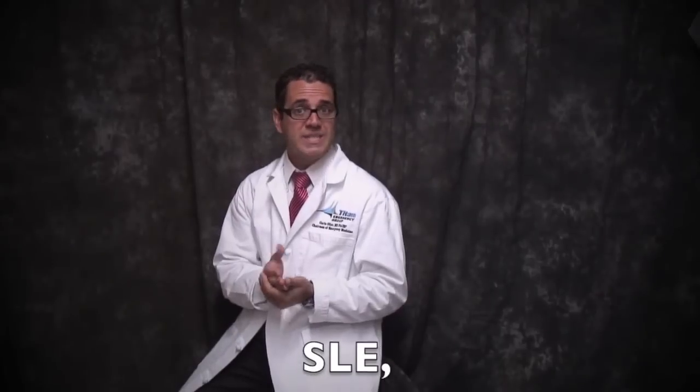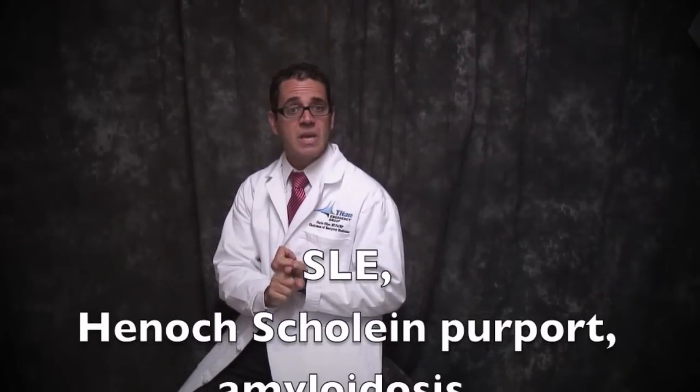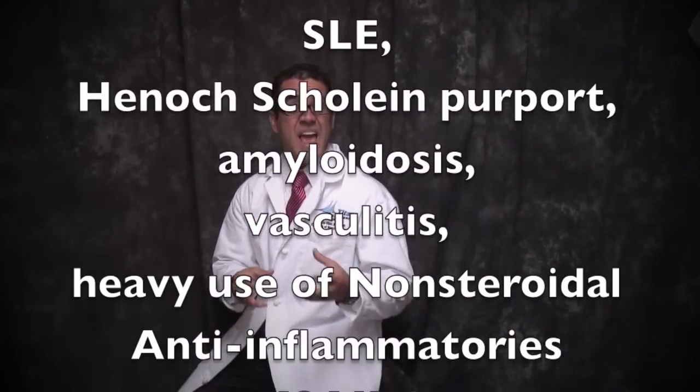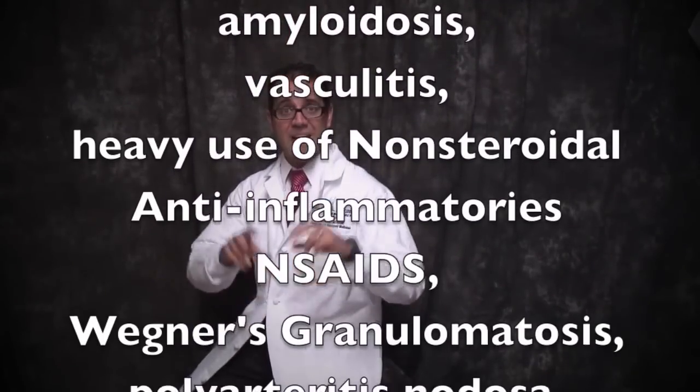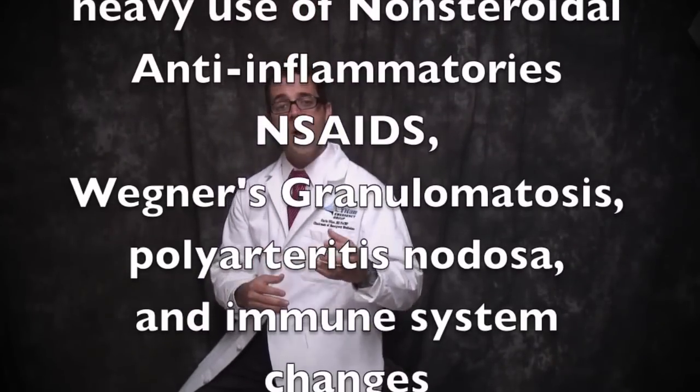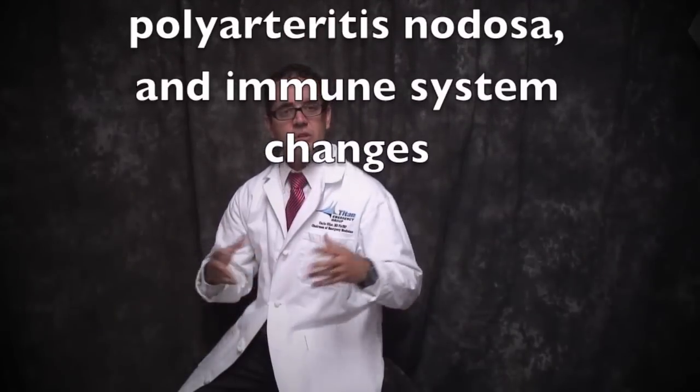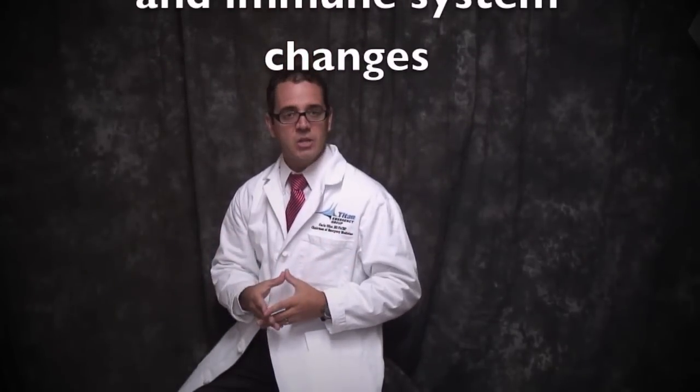What are the causes of glomerulonephritis? Glomerulonephritis can start after something relatively benign like a sore throat or even a skin infection. But other illnesses can cause this condition. This includes systemic lupus erythematosus, Henoch-Schönlein purpura, amyloidosis, vasculitis, heavy use of non-steroidal anti-inflammatories or NSAIDs like ibuprofen and naproxen, Wegener's granulomatosis, polyarteritis nodosa, and certain degrees of immune system changes. Many times doctors are unable to figure out what exactly caused it. We just know that you have it.